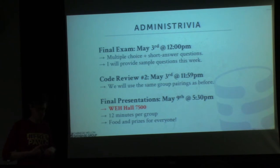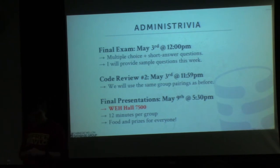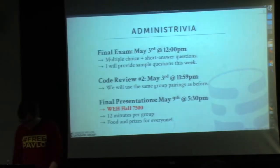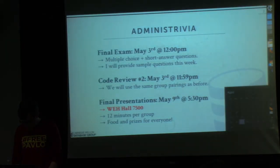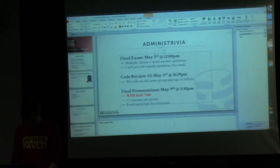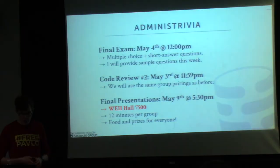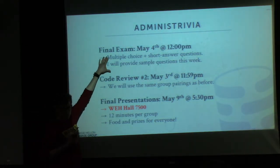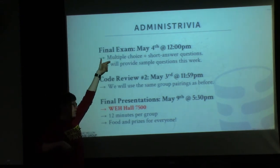A student notes May 3rd is a Wednesday — so the final exam is Thursday May 4th, not the 3rd. For the second round code review, it's either May 3rd or May 4th — we'll double check the website. The idea is that you make your code for your project available to the other group even though you haven't finished — it's a process of getting feedback as you work towards the final project.